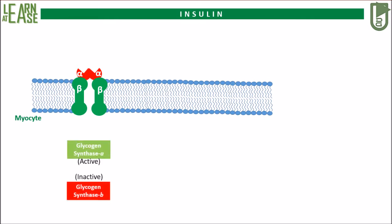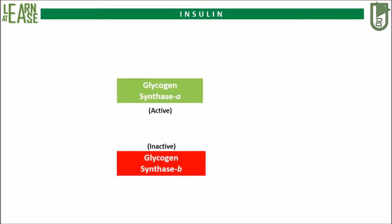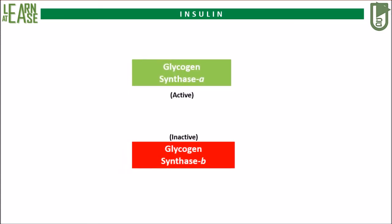Inside the target cell, there exists an enzyme, glycogen synthase, which can exist in active and inactive forms. Glycogen synthase possesses several serine and threonine residues; in its active form, these residues are non-phosphorylated. The active form of this enzyme triggers synthesis of glycogen.